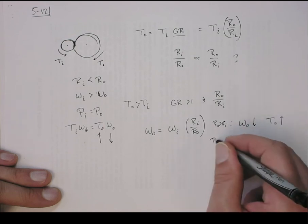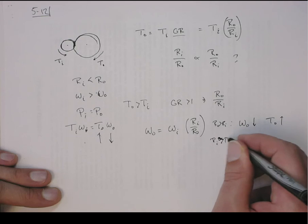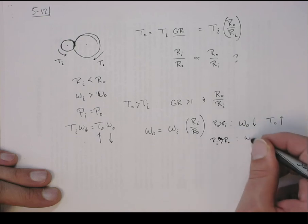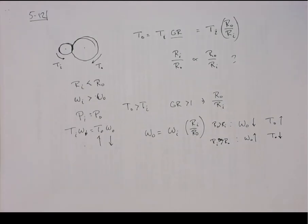This is when r_outer is greater than r_inner. You can take the same logical argument for r_inner greater than the output, and this will give you the opposite relationship. The speed will go up, and then the torque will go down. So it's probably always a good thing to kind of get a good feel for that.